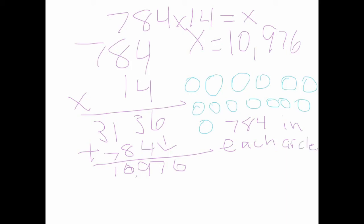Okay, so after you do that, you can either add 784 14 times or multiply. Then, you would do 14 groups of 784.